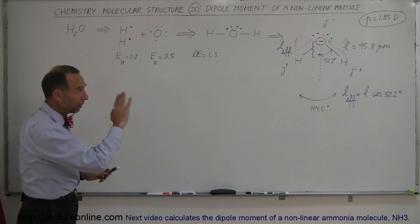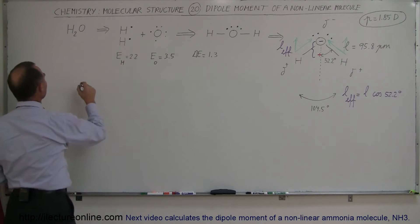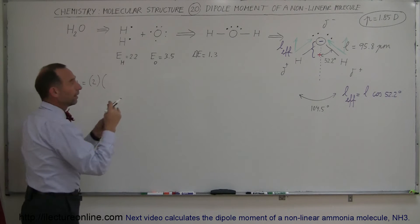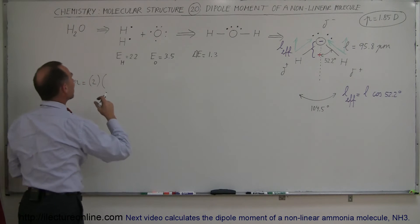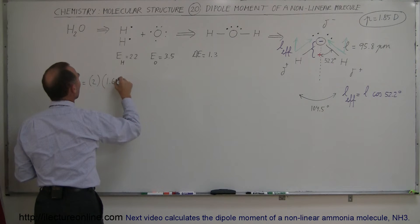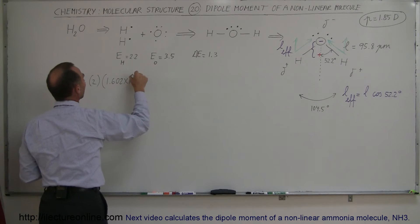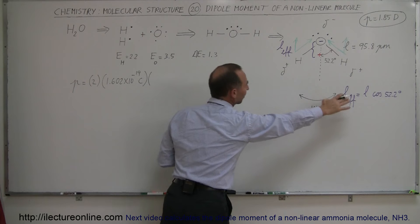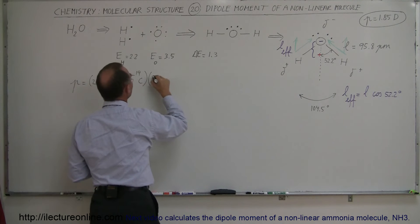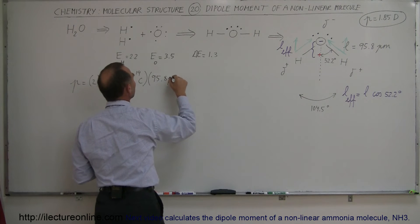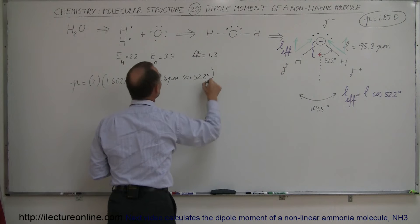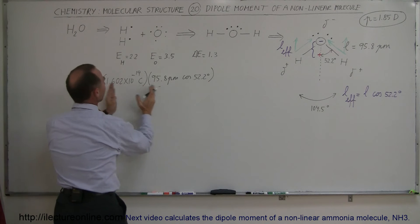Remember, for the time being we're going to ignore those electron pairs. So we can say that the dipole moment P is equal to the charge. Now we have two of those, I'm going to put in the number. Two times the charge of one electron being transferred from one of the hydrogens to oxygen, which is 1.602 times 10 to the minus 19 coulombs. The bond length is now going to be the effective length. So the effective length, which is L, which is 95.8 picometers times the cosine of 52.2 degrees.